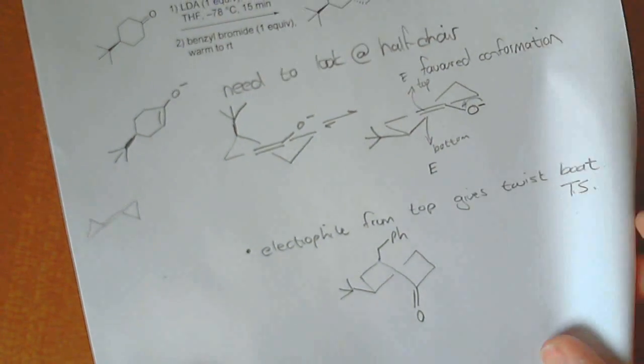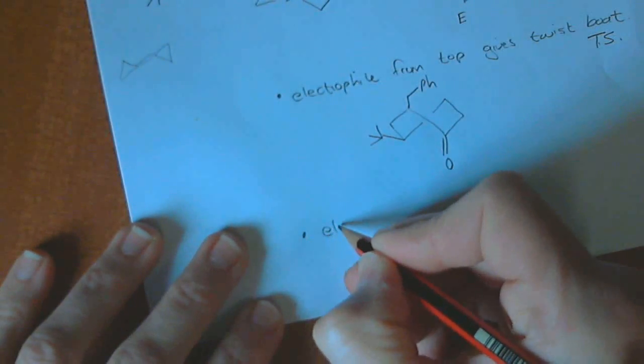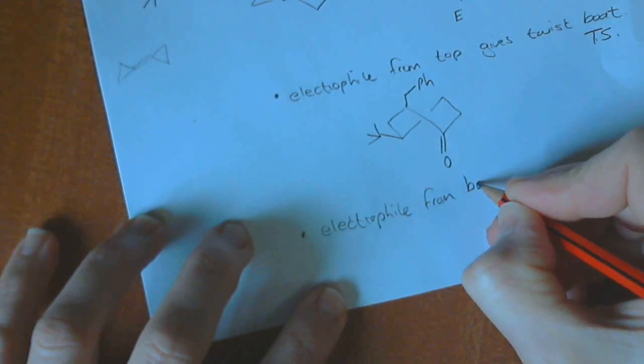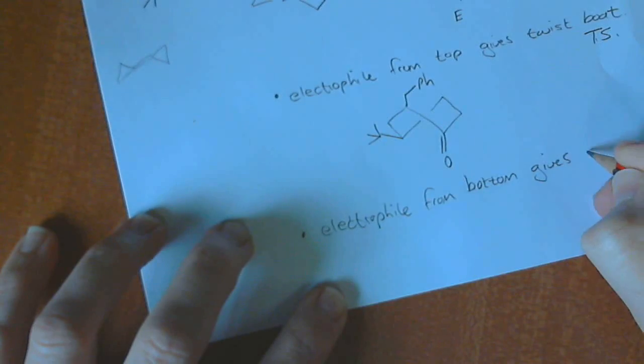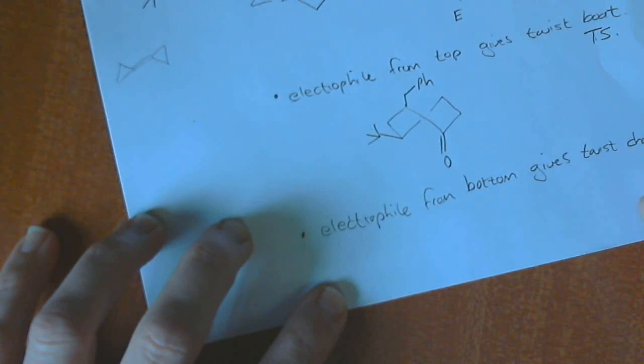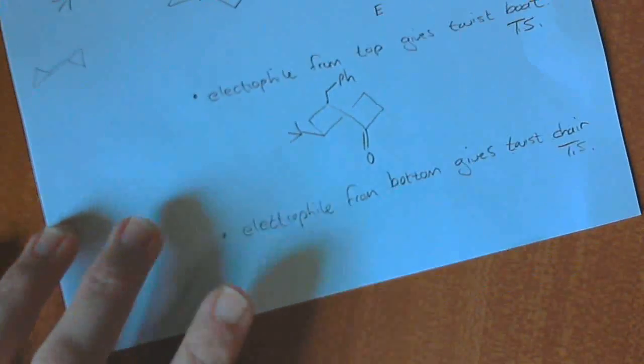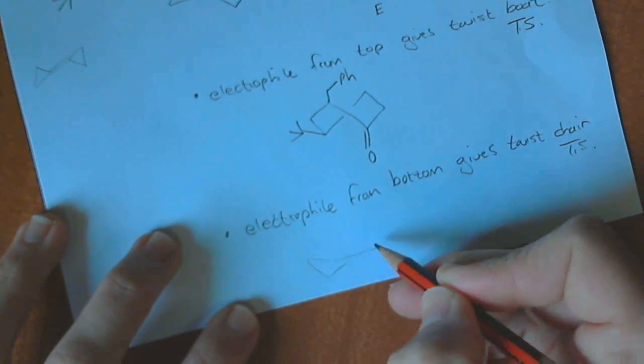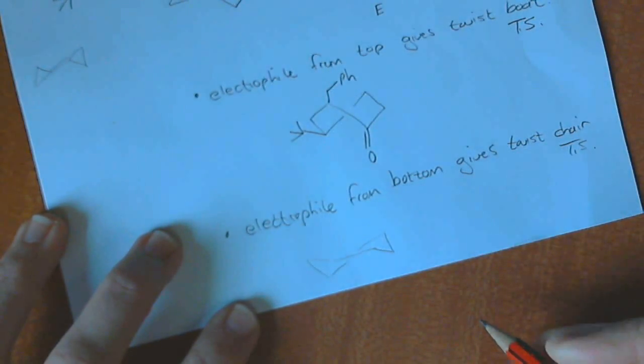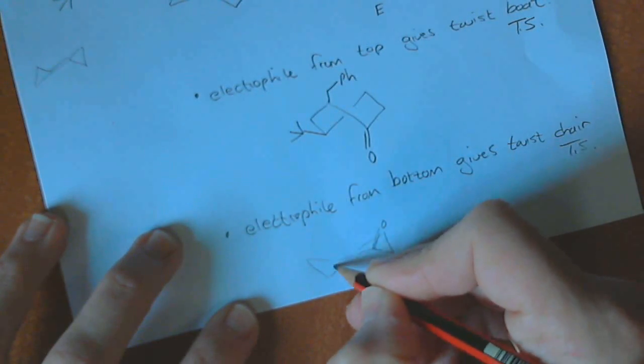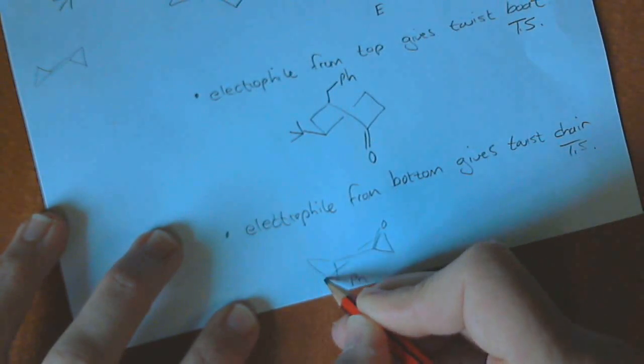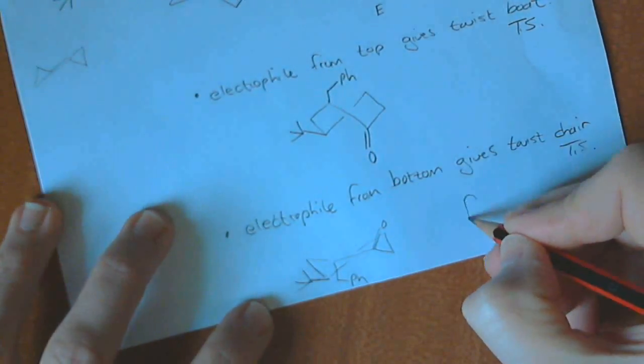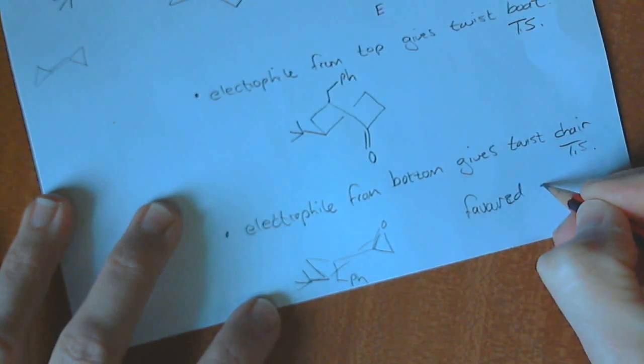The other option is electrophile from bottom gives twist chair transition state. And the twist chair is going to look a little bit like, so it's going more like this, something a bit like that, where we know this is going to become the carbonyl. This over here is the phenyl. We've still got that sitting over there. And this is favored and gives product.